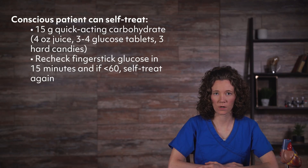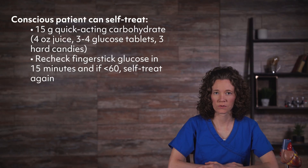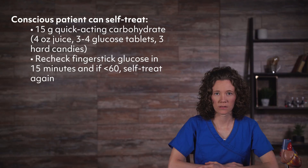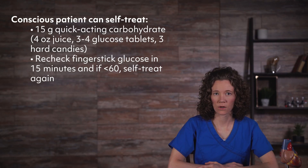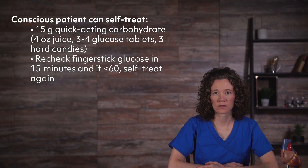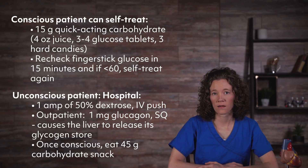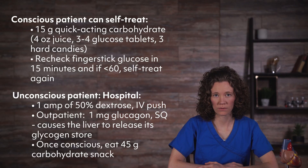Conscious patients should self-treat with 15 grams of quick-acting carbohydrate, such as four ounces of juice with no added sugar, three to four glucose tablets, or three hard candies. Recheck the finger-stick blood glucose in 15 minutes, and if it remains below 60, the patient should self-treat again.